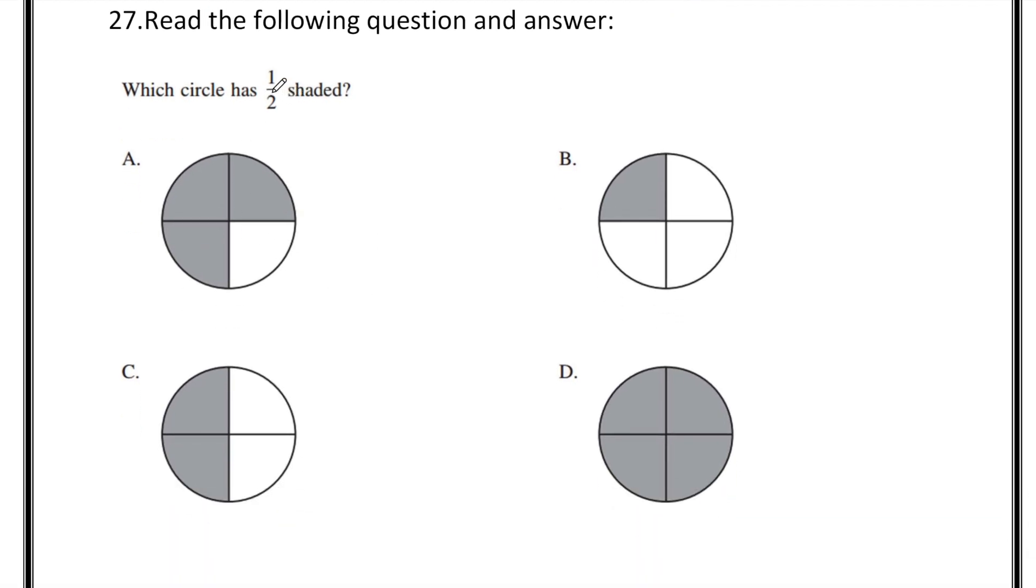Which circle has 1 by 2 of the shaded part? 1 by 2 means half of the full circle. This is the full circle, half of it means this much will not be covered. Meaning this is the answer C.